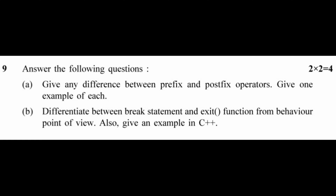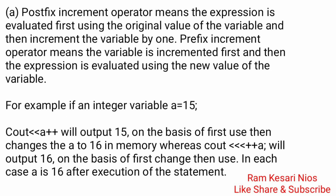Question 9a: Difference between prefix and postfix operators with one example each. Postfix increment operator means the expression is evaluated first using the original value of the variable and then the variable is incremented by one. Prefix increment operator means the variable is incremented first and then the expression is evaluated using the new value. For example, if integer variable a = 15, cout << a++ will output 15, then changes a to 16 in memory, whereas cout << ++a will output 16. In each case, a is 16 after execution.